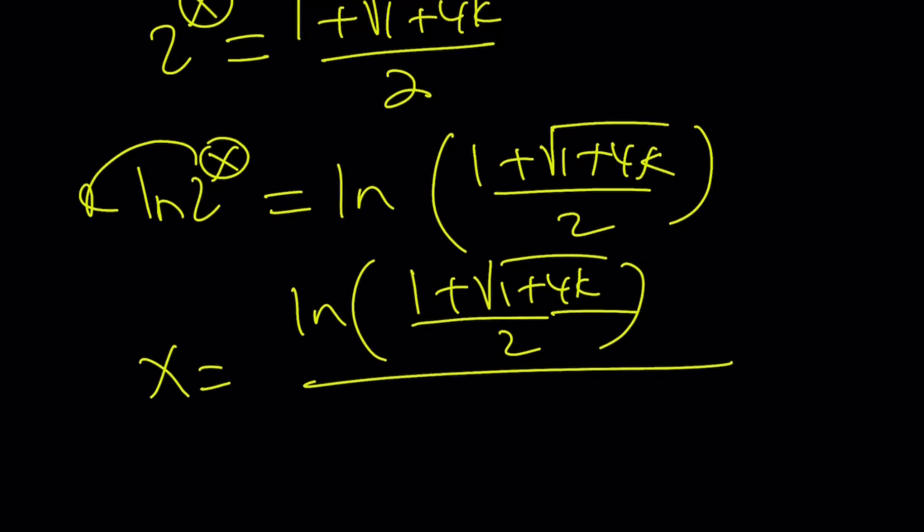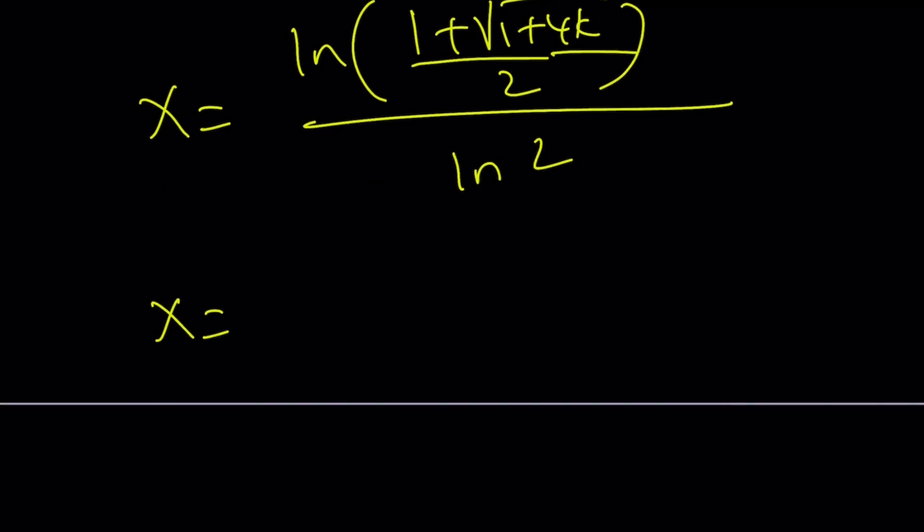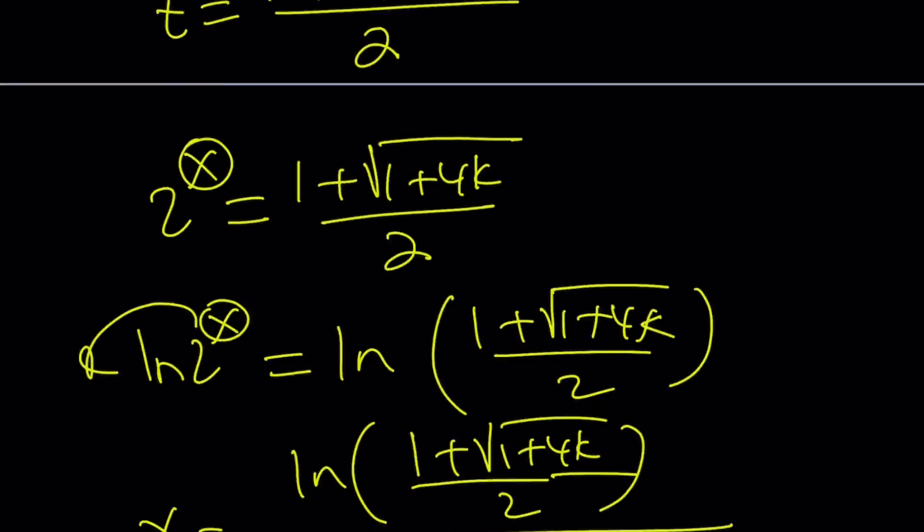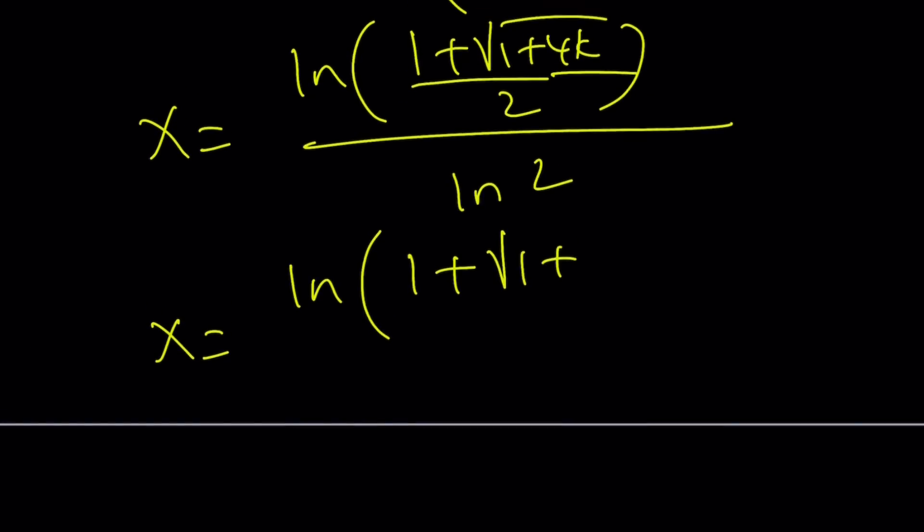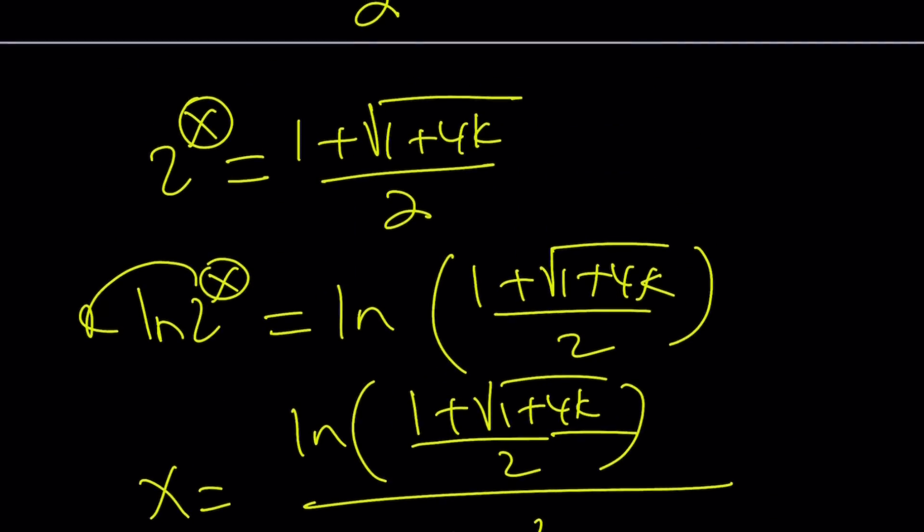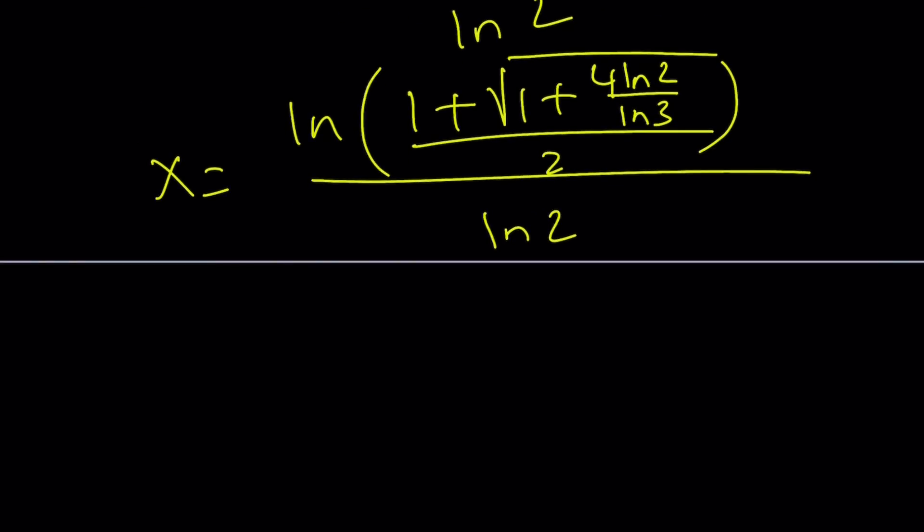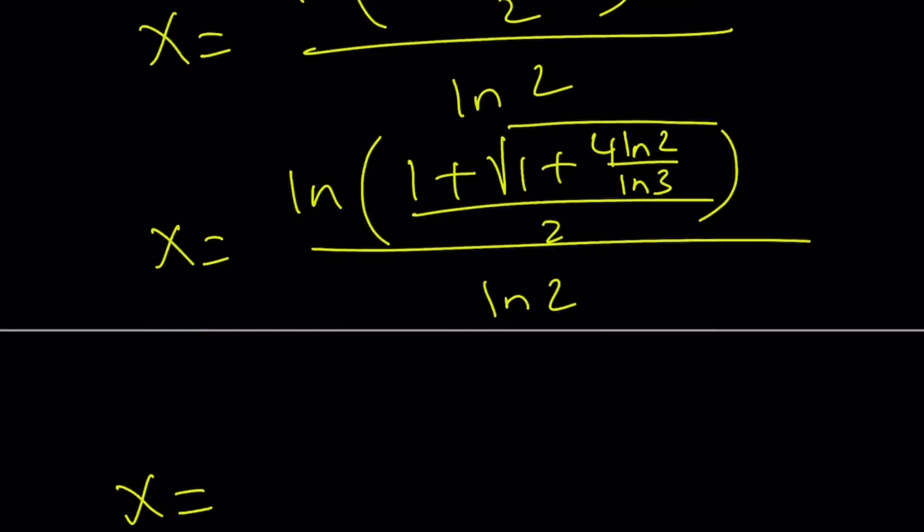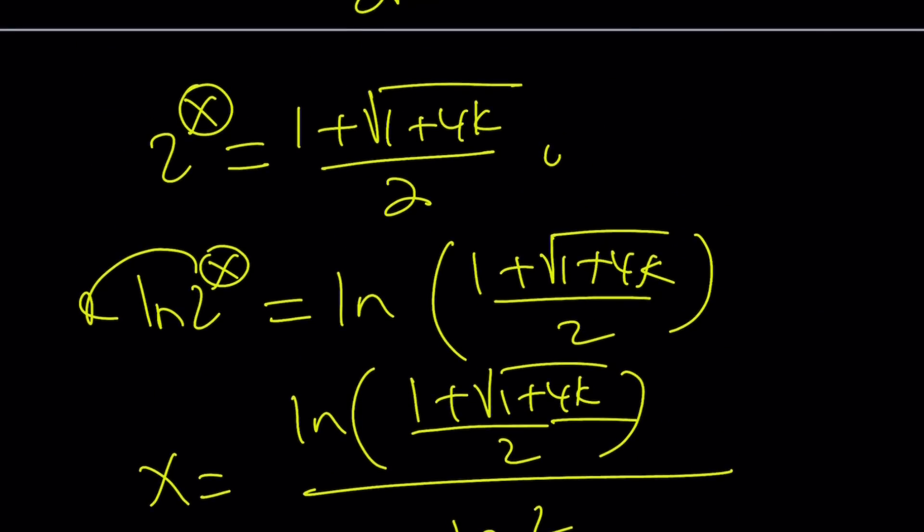Awesome now let's substitute K with what it is: x = ln((1 + √(1 + 4·ln 2 / ln 3)) / 2) / ln 2. You see that is a really nice expression for x. And what about the other solution? It's just going to be the same thing with the minus sign because the quadratic equation says so.